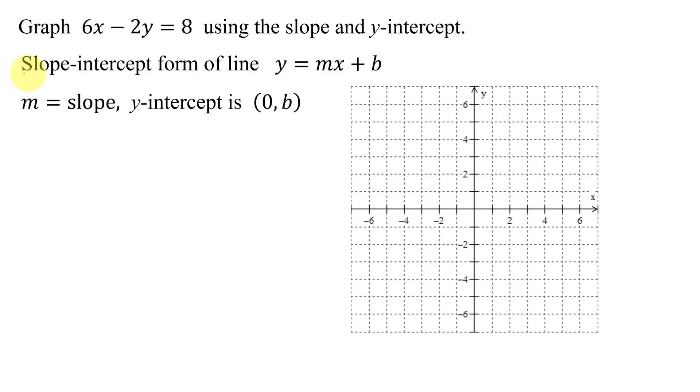We're quickly reviewing. The slope-intercept form of a line is y equals mx plus b, where m equals the slope and the y-intercept is the ordered pair (0, b).